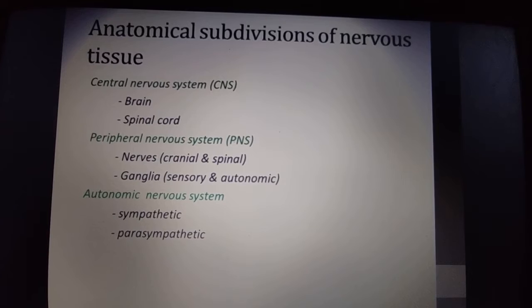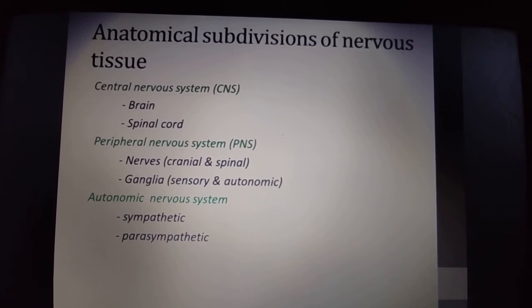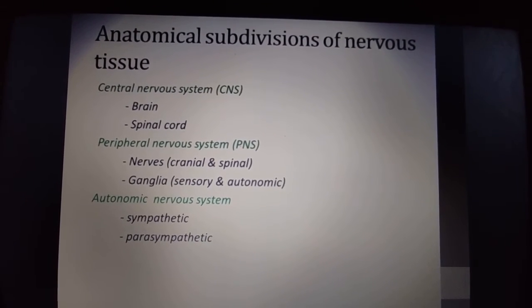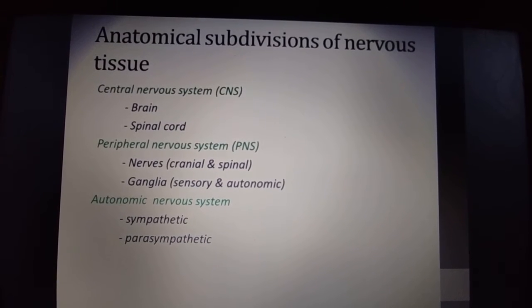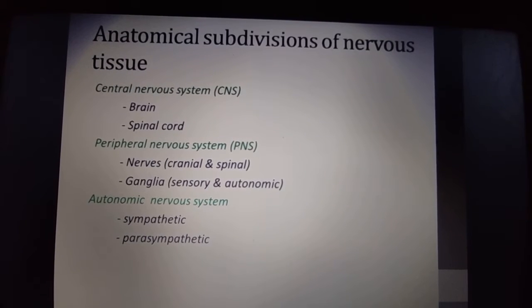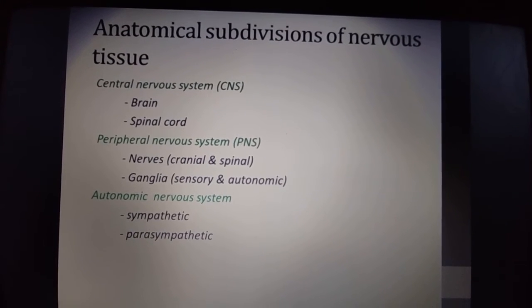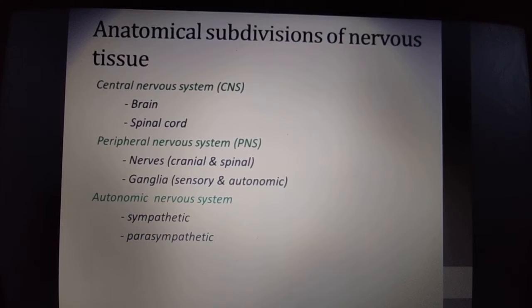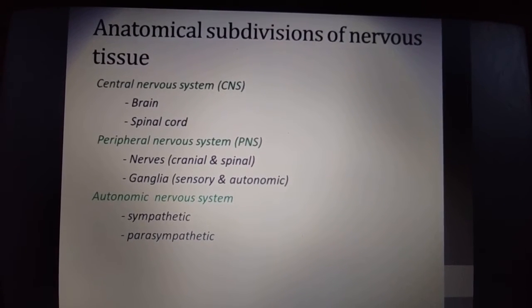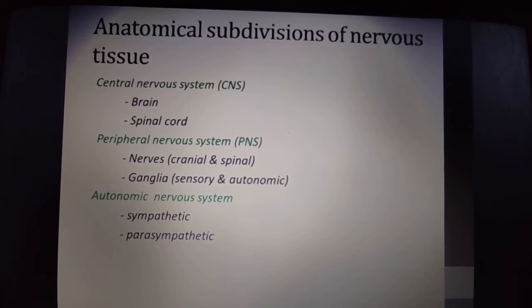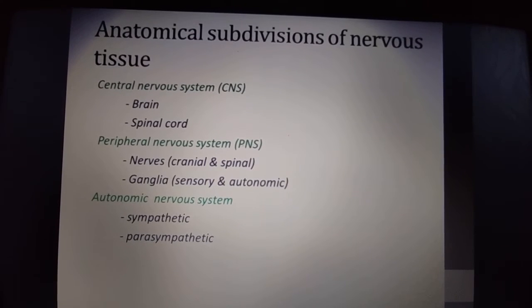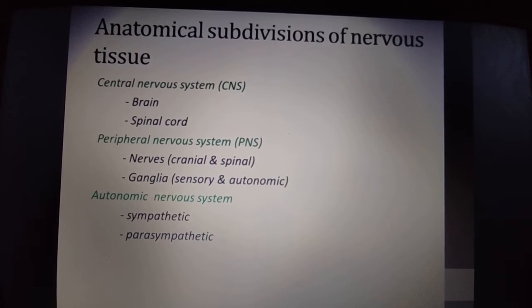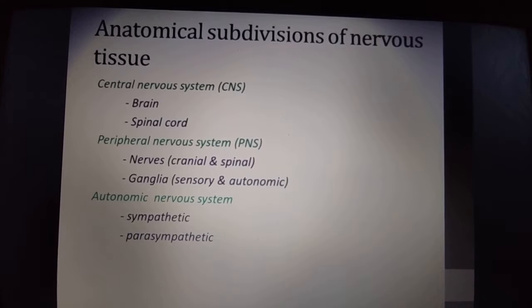The nervous tissue is divided into three main parts: the central nervous system, the peripheral nervous system, and the autonomic nervous system. The central nervous system includes the brain and spinal cord. The peripheral nervous system includes the nerves of the cranial and spinal regions, as well as sensory and autonomic ganglia.